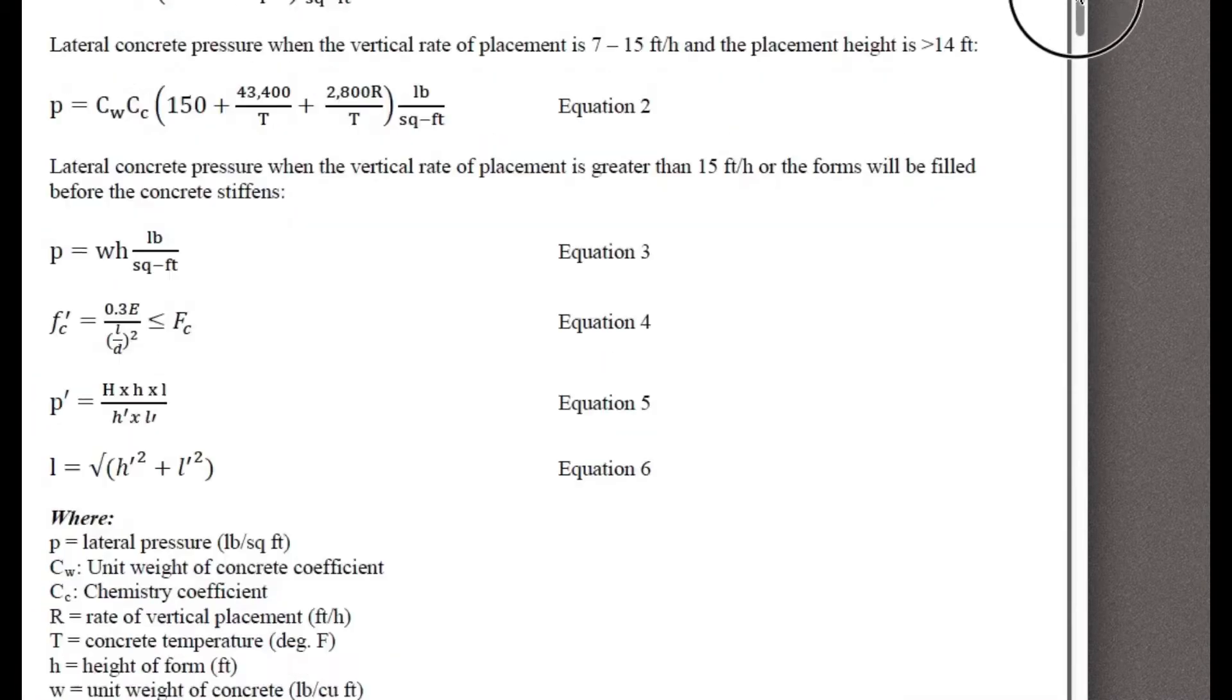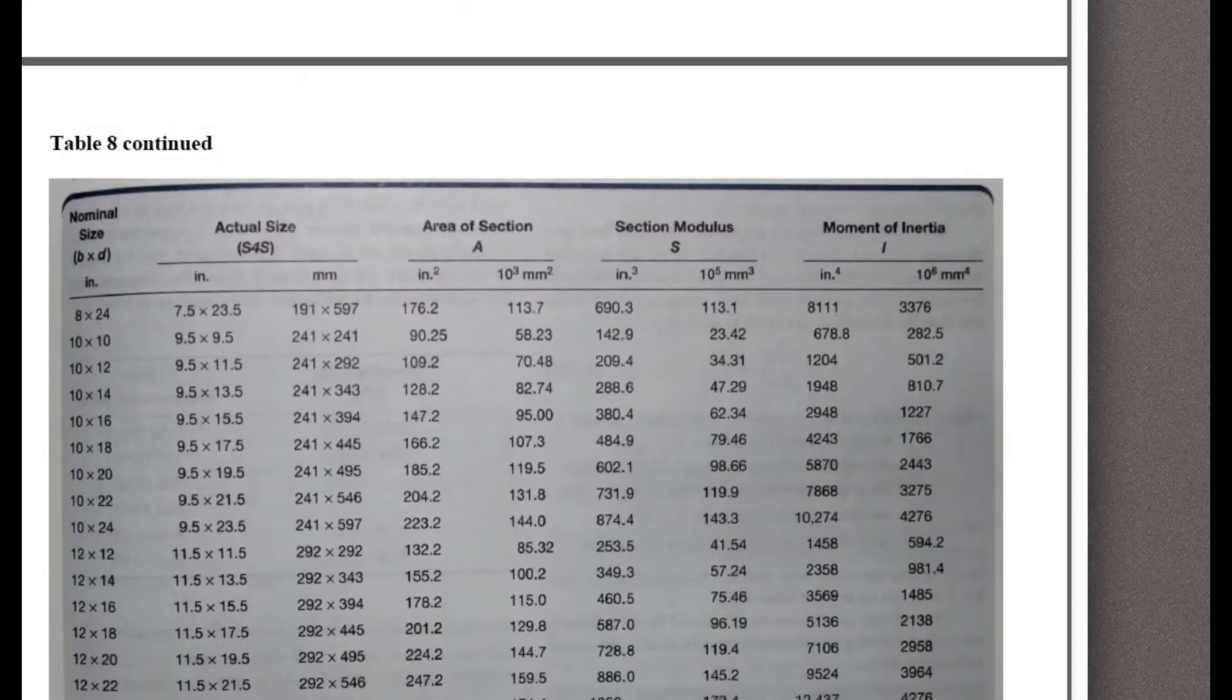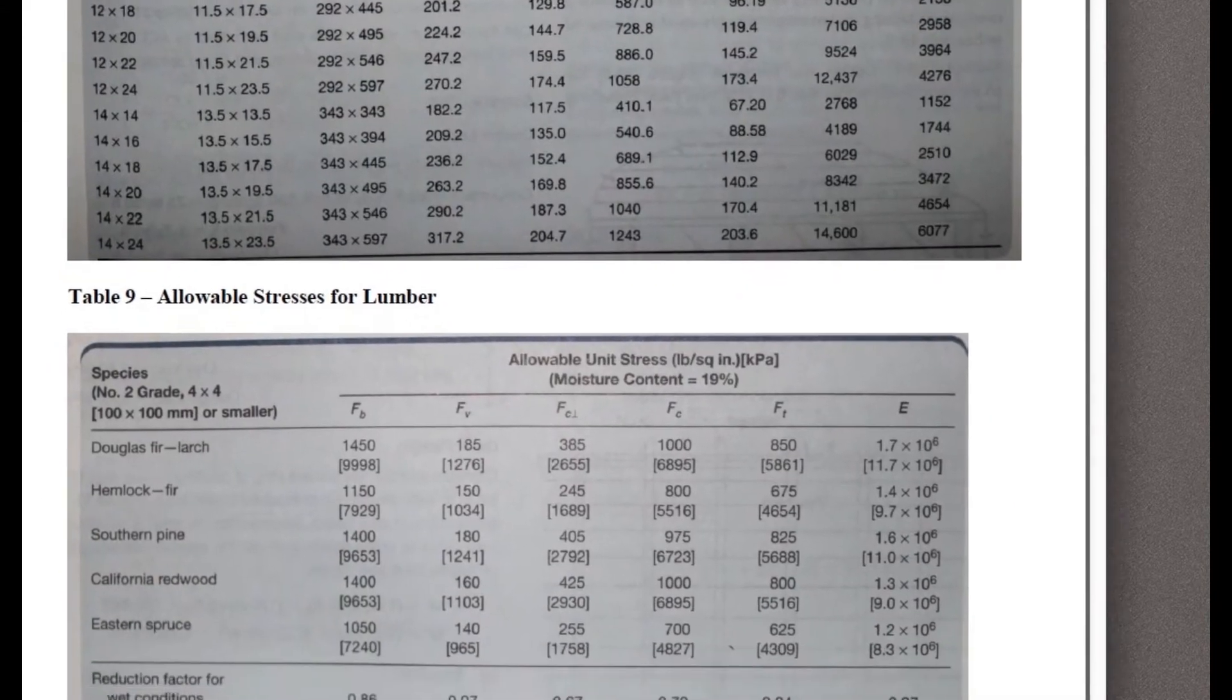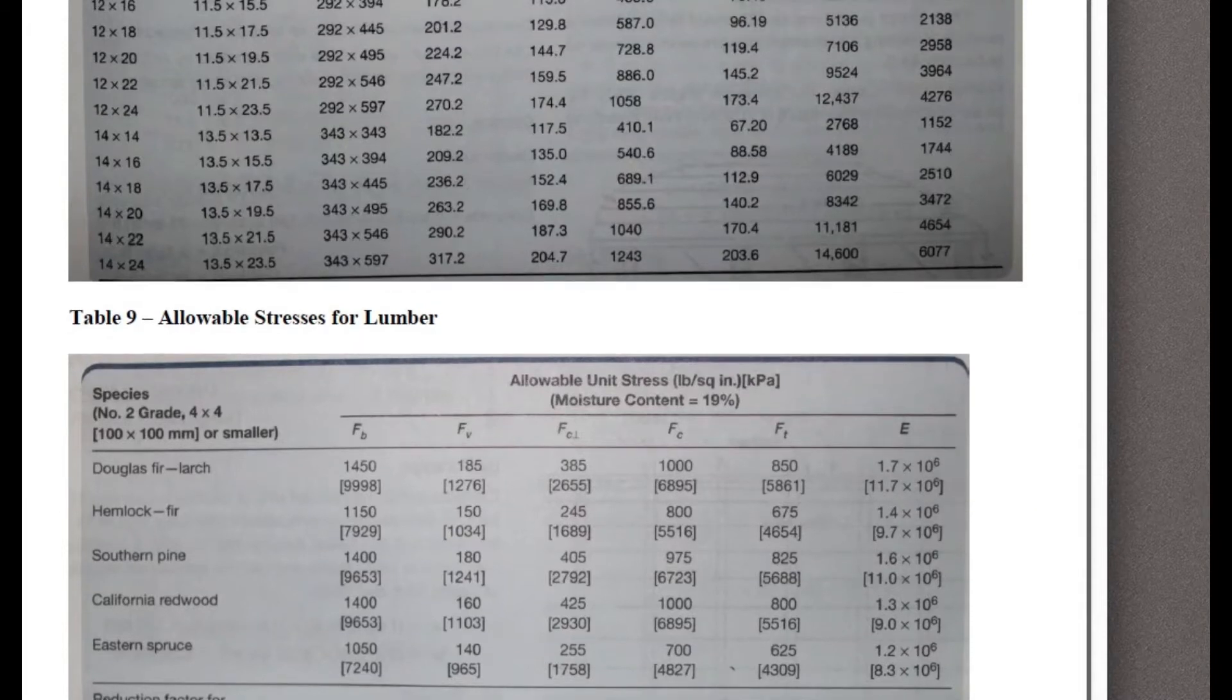Before we do any of this, let's just get organized. Let's get the information that we're going to need. Let's get the wood properties. So let's go ahead and just get FC, FT, the compressive stress, the tensile stress, max stress, and E. Let's go find those real quick. So let's go to this table. It's pretty far down here in the document. Right here. Here's our table. This is the allowable stress for lumber, table 9. So we've got Douglas fir Larch. The problem statement said FC is 1000, FT is 850, E is 1.7 times 10 to the 6th.